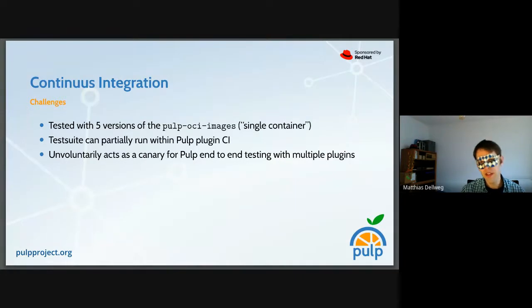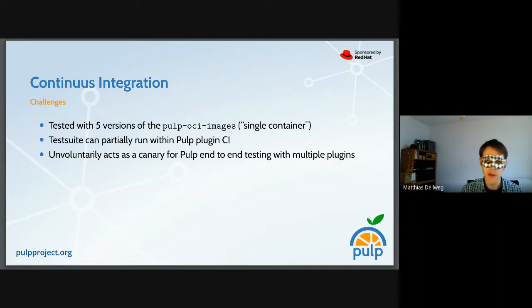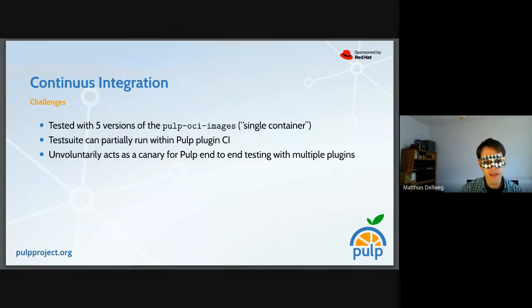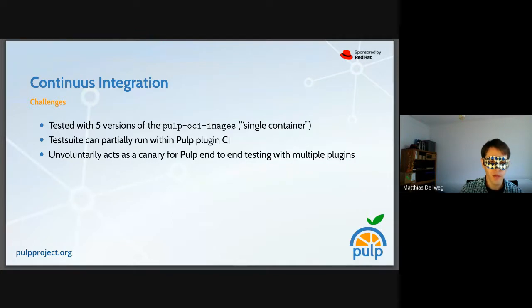The CLI has continuous integration, and we test six versions of the OCI single-container images — five versions for released PULP Core, plus one for the nightly container which installs PULP Core and the whole plugin canon from source. The test suite not only runs in the CLI itself but is run partially on selected plugins that opt in to run their corresponding CLI tests. This is quite nice for integration — we see early if a plugin change would break the CLI before it gets merged.